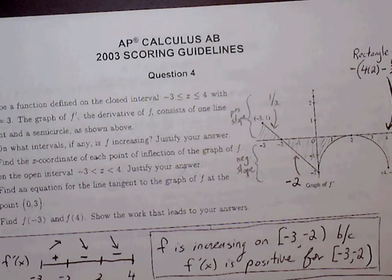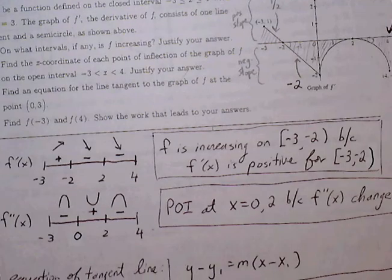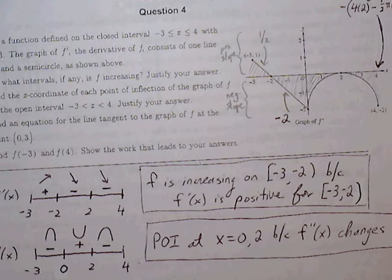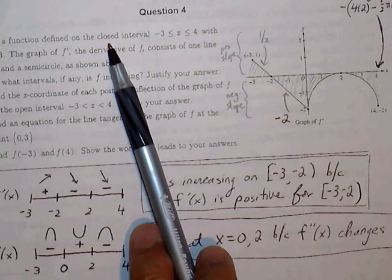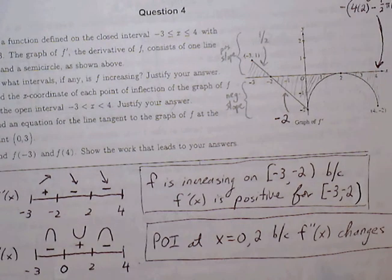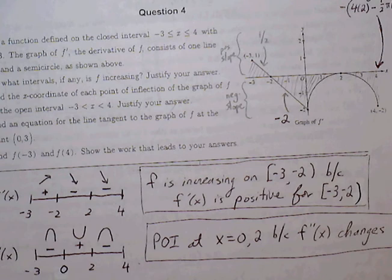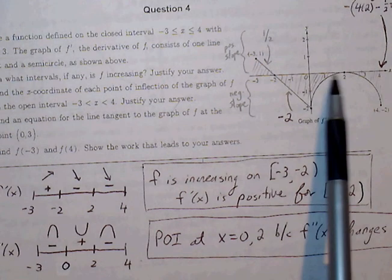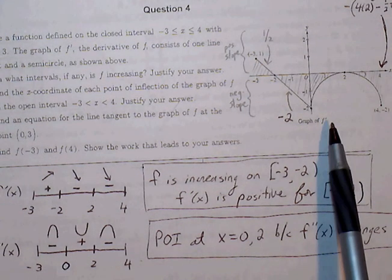Let's move on to number four. We have a graph of F prime. Let F be the function defined on the closed interval from negative 3 to 4, with F of 0 equal to 3. The graph of F prime, which is the derivative of F, consists of one line segment and a semicircle as shown.